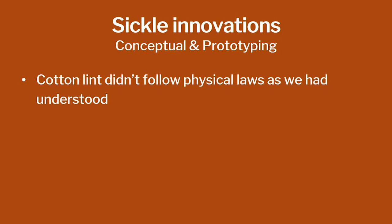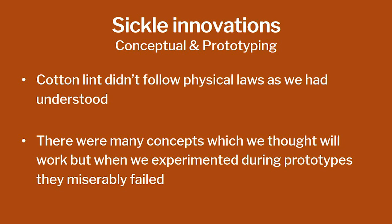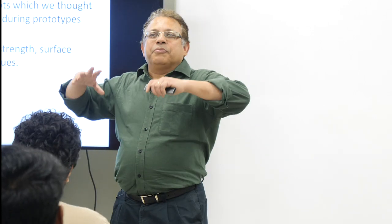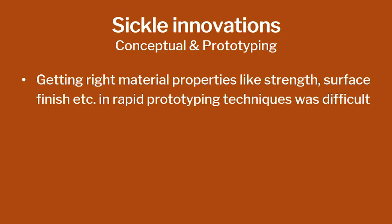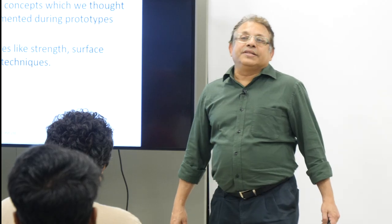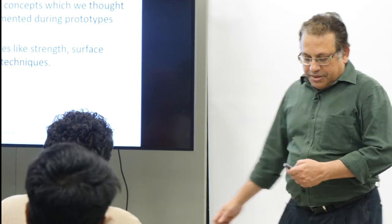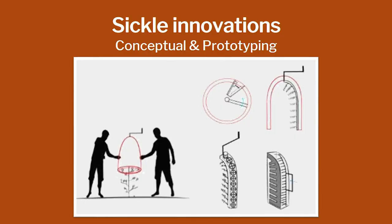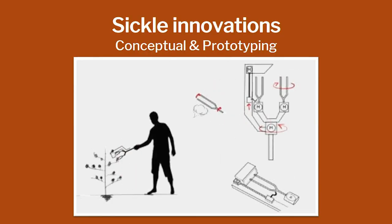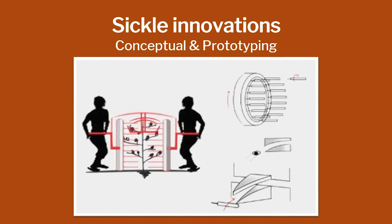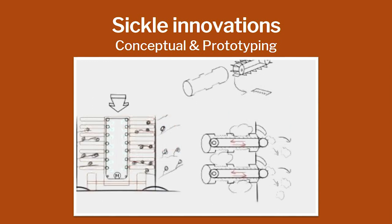It did not follow physical laws as they were understood. They tried many things and it worked reasonably well, but many times during prototyping it failed miserably. You have to come up with multiple ideas and fix them as you go along. Getting the right material properties like strength and surface finish was a major challenge. They were using rapid prototyping because they wanted to do it quickly, so they went through the cotton port and tried the idea.